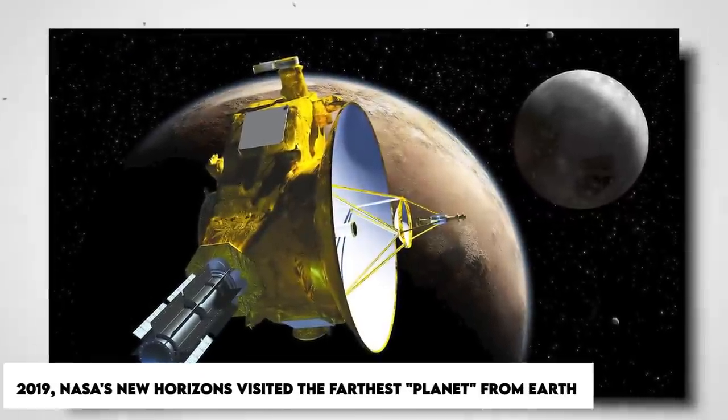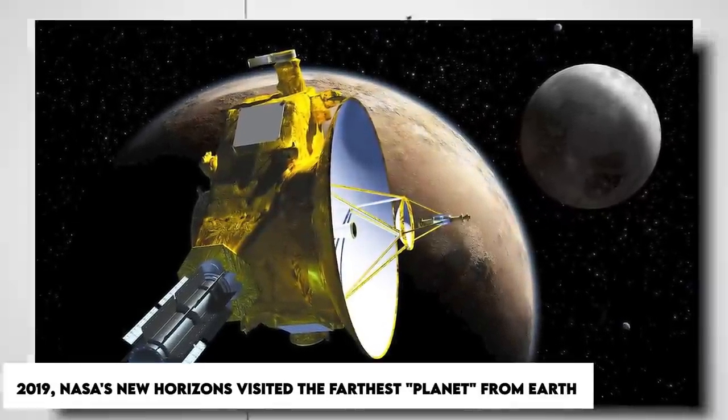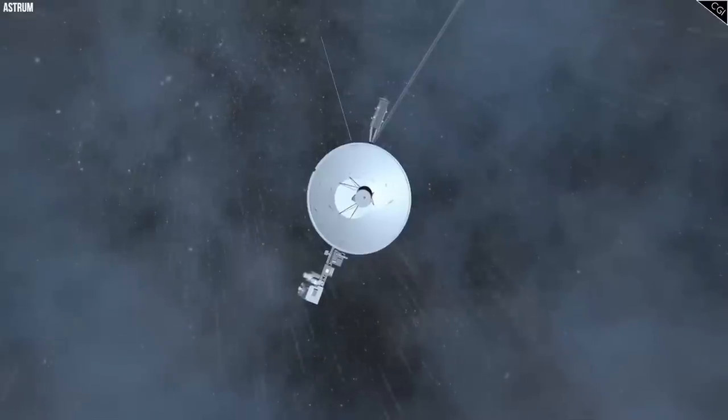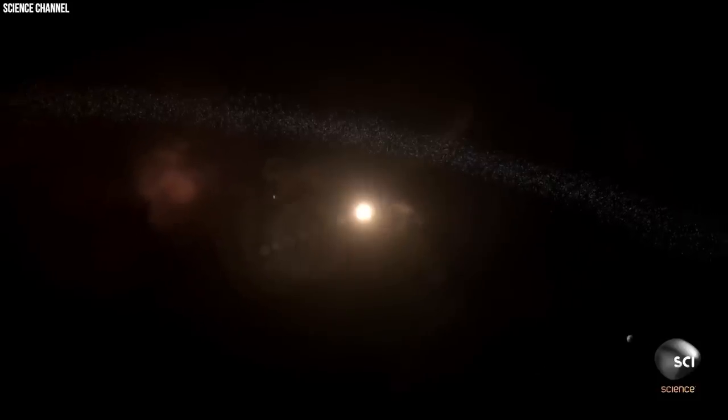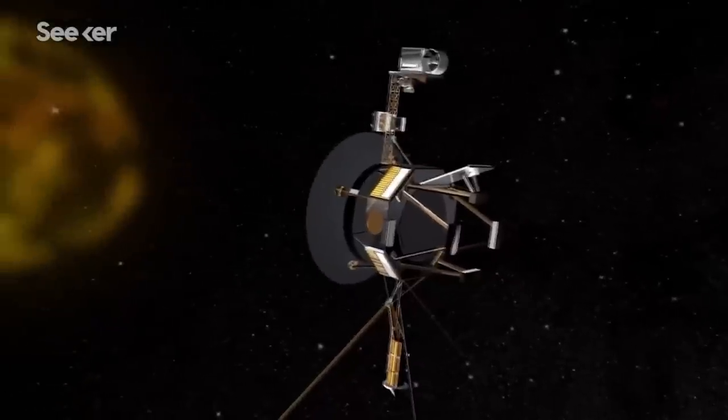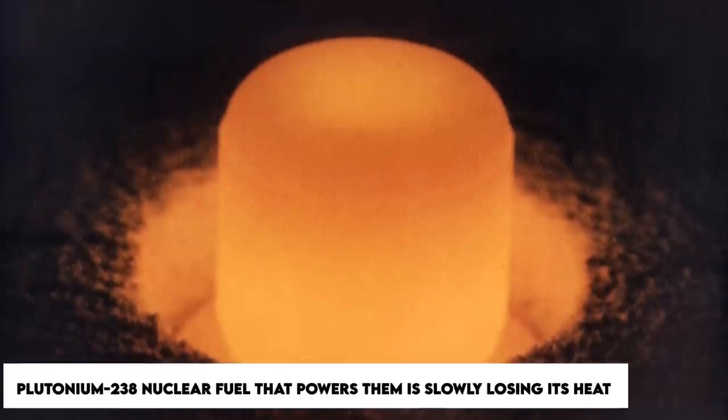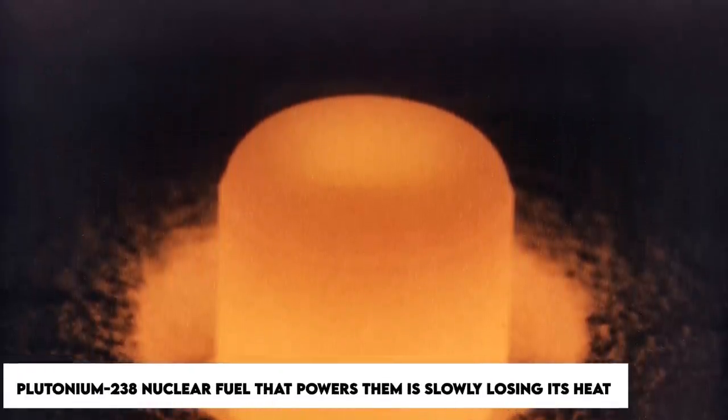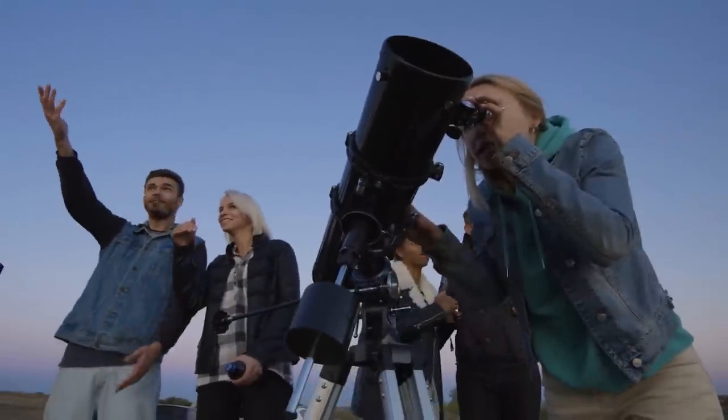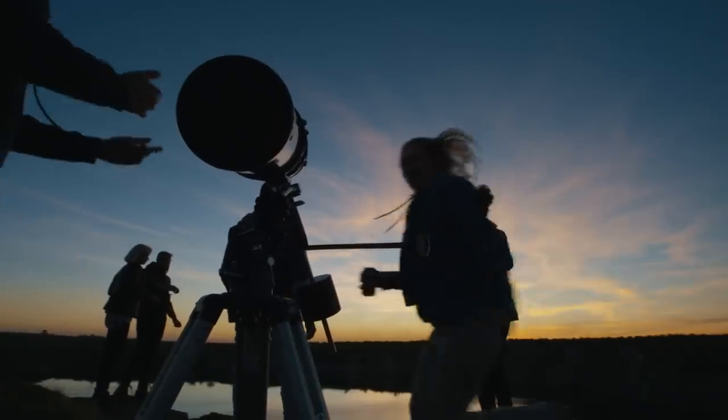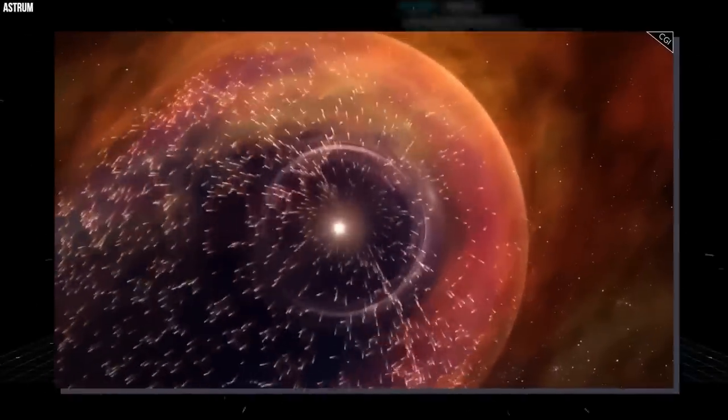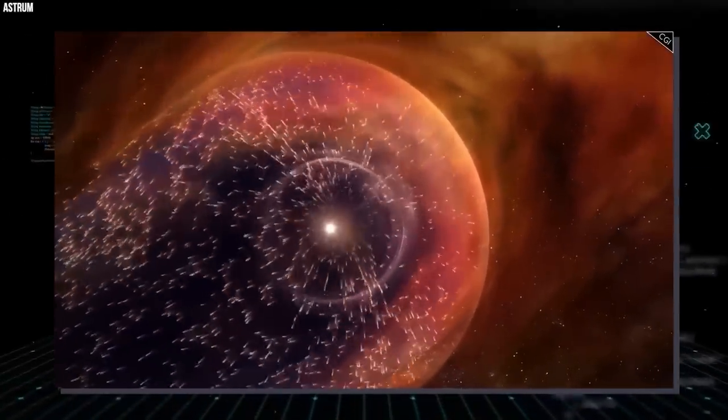In early 2019, NASA's New Horizons visited the farthest planet from Earth, although it is not projected to have enough fuel to travel to the solar system's rim. Despite the two Voyager probes' best efforts over the past 42 years, the plutonium-238 nuclear fuel that powers them is slowly losing its heat. Expert astronomers estimate that the probes will be retired for good in around five years. They should be able to conduct additional interstellar measurements till then.